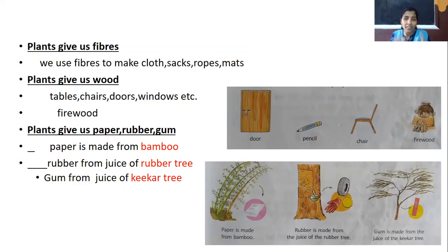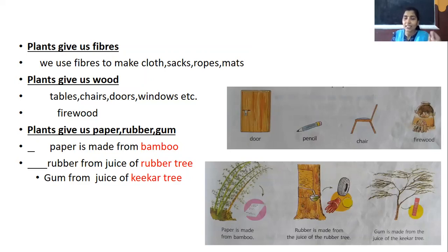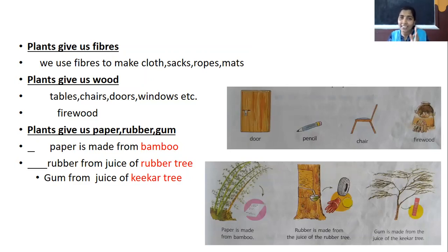Rubber is made from the juice of the rubber tree. Gum is from the juice of the kika tree. So: paper is made from bamboo, rubber from the juice of rubber tree, and gum from the juice of kika tree.